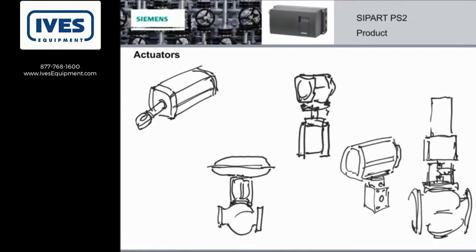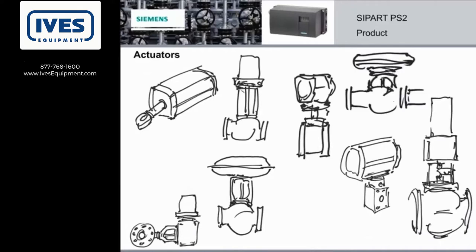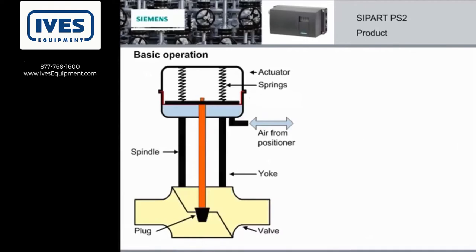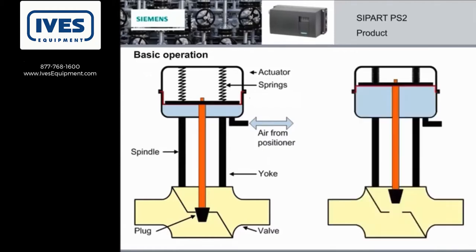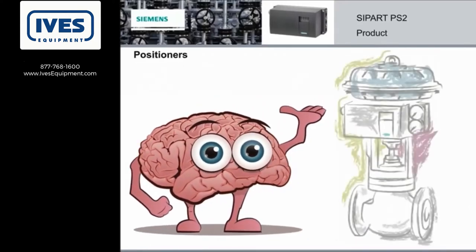An actuator is a type of motor, and can be electric, hydraulic, or pneumatic, and single acting or double acting. Whatever the type, it is the actuator that moves the position of the valves, and this movement can be linear or rotary. The basic operation is very simple. On the left is a linear, single acting actuator with the plug in the closed position. To the right is an open valve allowing the material to flow through. So how does the actuator know when and how much to move the valve? It's the positioner.